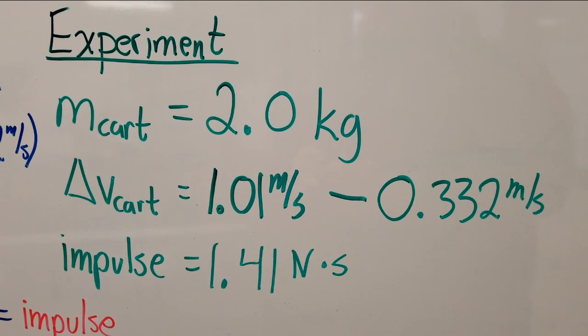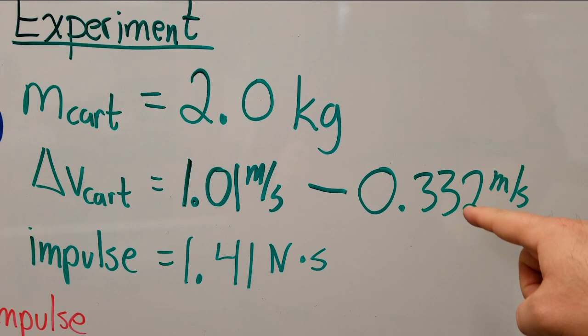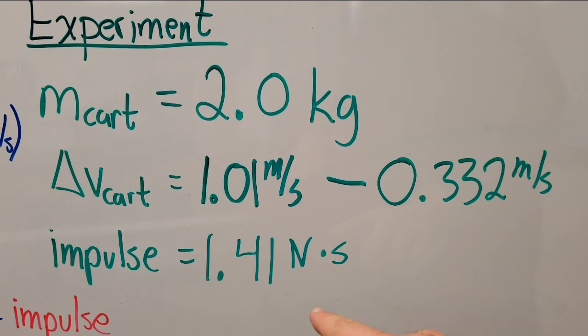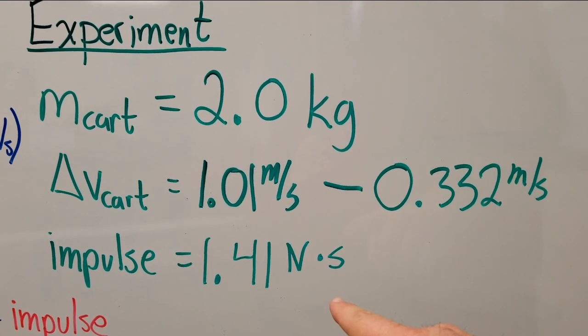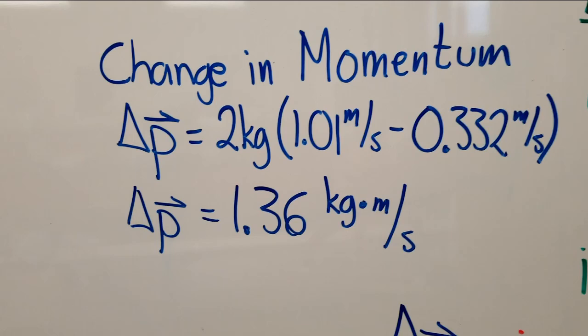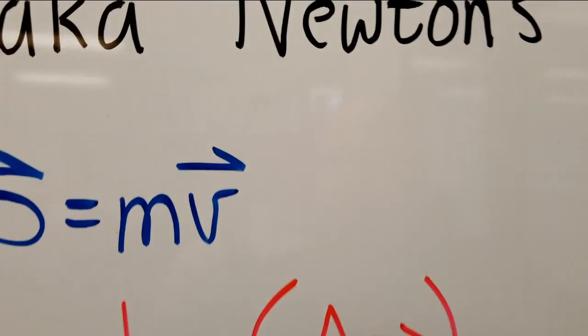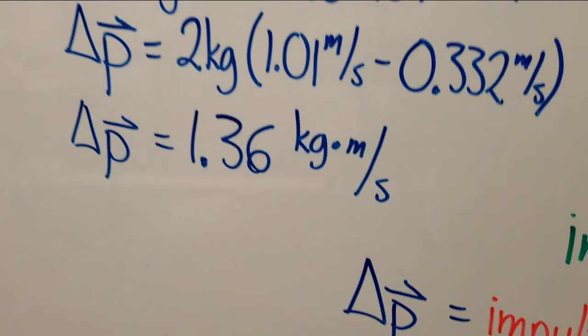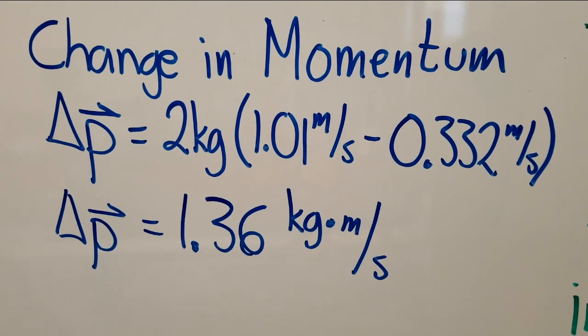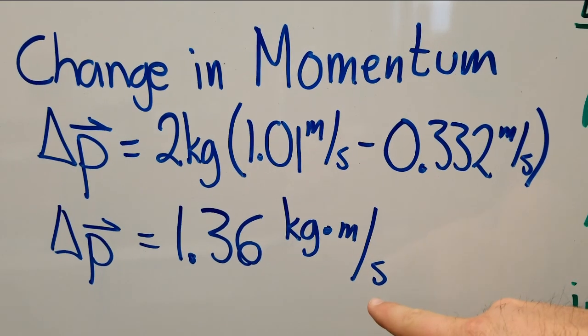In that experiment we took a cart of mass 2 kilograms and we accelerated it from an initial velocity of 0.332 meters per second to a final velocity of 1.01 meters per second by exerting an impulse of 1.41 newton times seconds on it. Doing some math manipulation with these numbers we can calculate the change in momentum of our cart. By multiplying the mass by the change in velocity, because momentum's definition is mass times velocity, I can get a value for the momentum change of 1.36, and the unit for right now is just kilogram times meter per second.